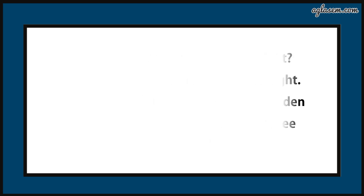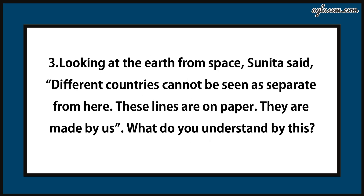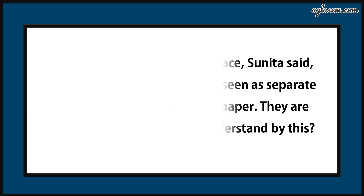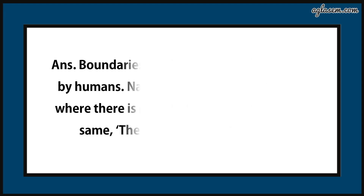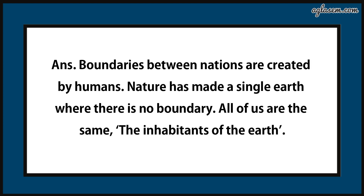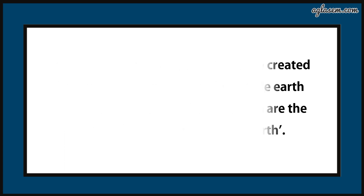Question number 3: Looking at the earth from space, Sunita said, 'Different countries cannot be seen as separate from here. These lines are on paper. They are made by us.' What do you understand by this? Boundaries between nations are created by humans. Nature has made a single earth where there is no boundary. All of us are the same — the inhabitants of the earth.